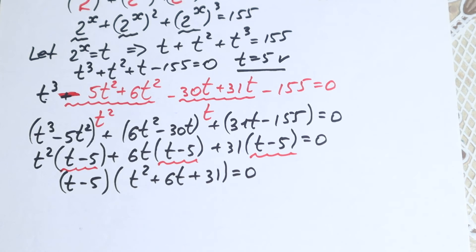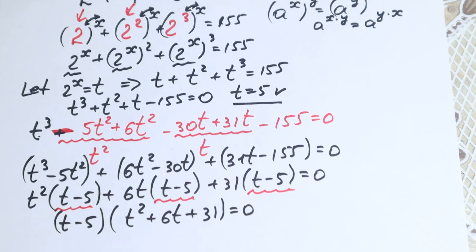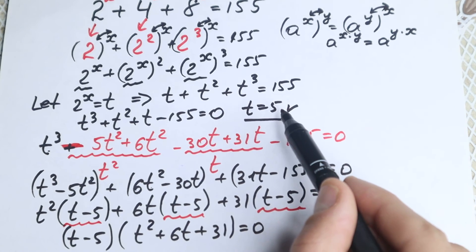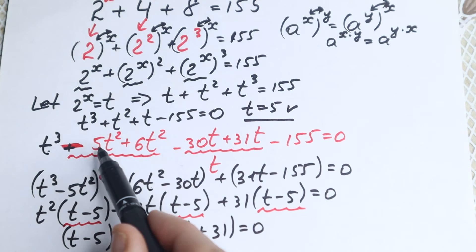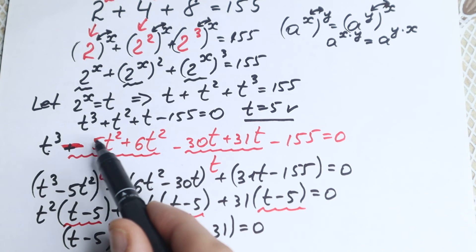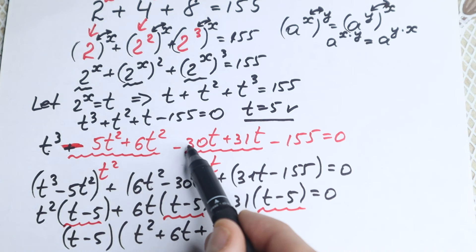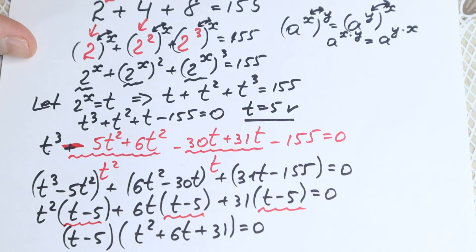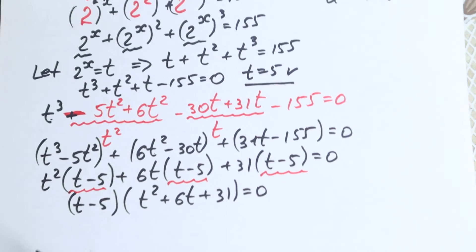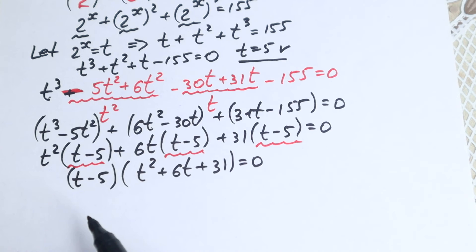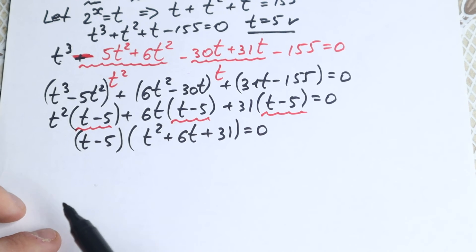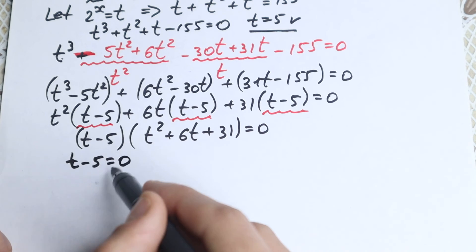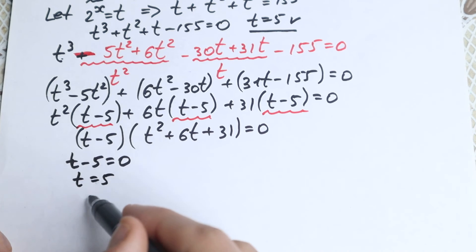Many students factor this in their own way — this is my approach. I identified t equals 5 as the solution, and structured the grouping to produce (t minus 5) in each pair. From the product (t minus 5)(t squared plus 6t plus 31) equals 0, setting t minus 5 equals 0 gives our first root: t equals 5.